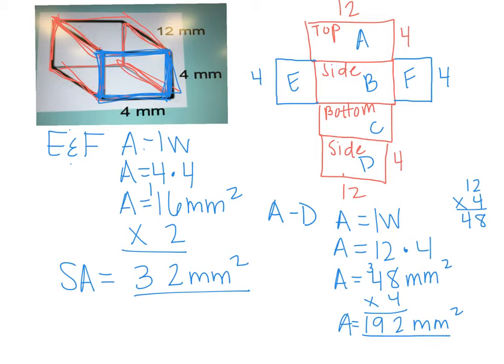What do you think we're going to do if we need to find total area? We're going to add them together. So we can say surface area equals 32 millimeters squared plus 192 millimeters squared.